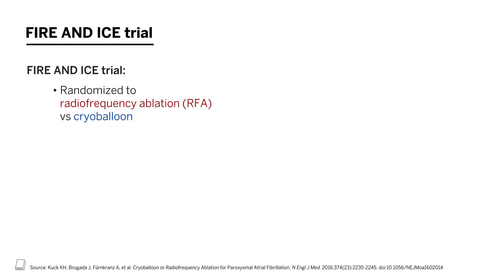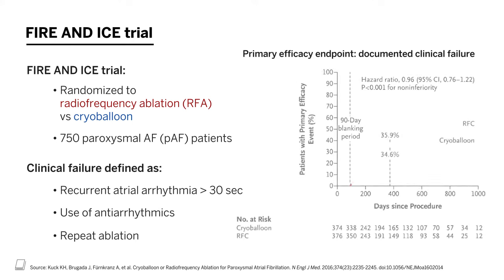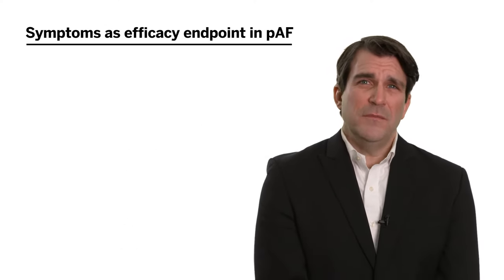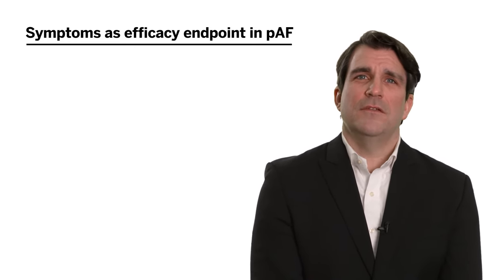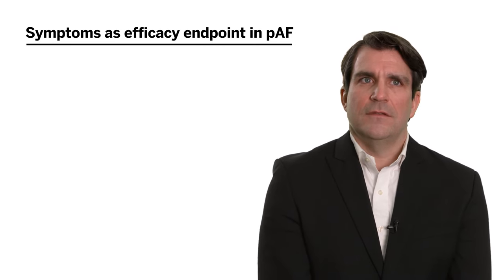In the FIRE and ICE trial, approximately 750 paroxysmal AFib patients were randomized to ablation with radiofrequency energy or cryoablation. Clinical failure was defined as recurrence of any atrial arrhythmia greater than 30 seconds, use of antiarrhythmics, or a repeat ablation. That is a high bar — preventing any 30 seconds of atrial arrhythmia over three to five years of follow-up. Using that definition, after several years, up to 40 to 50 percent of patients were considered a failure. However, if your efficacy endpoint is symptoms — the most common reason for a paroxysmal AFib patient to be referred for ablation — you may instead look at symptomatic arrhythmia recurrence.